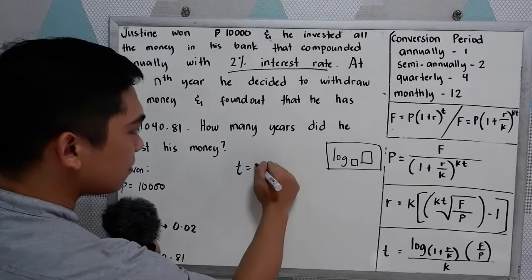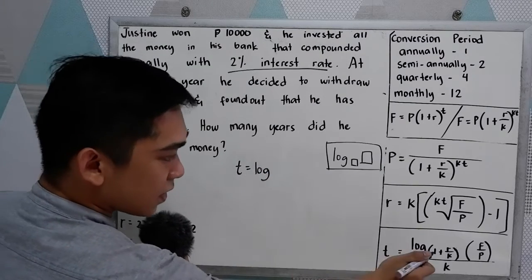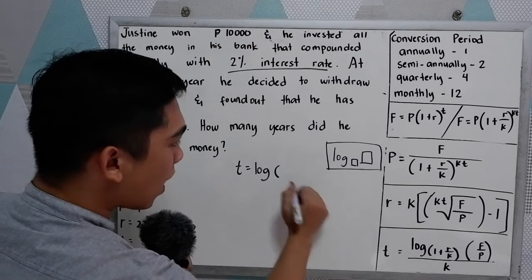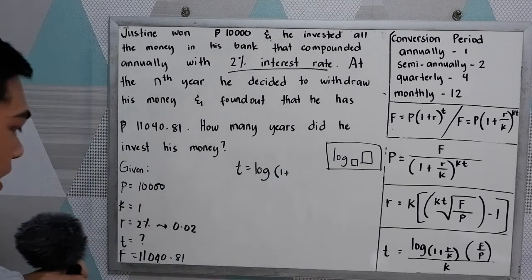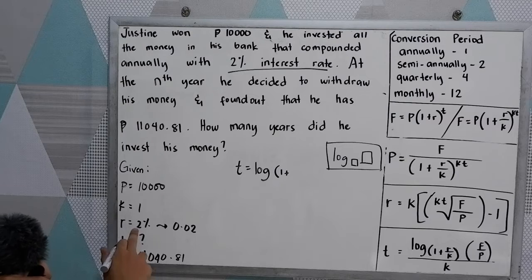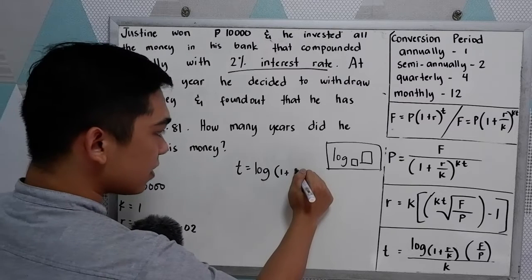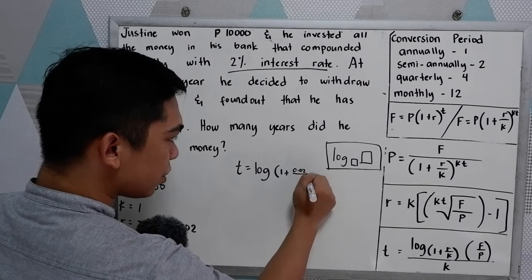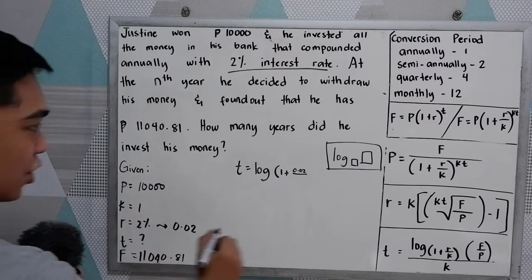So we have log(1 + R/K). R/K is 0.02 over K, which is 1.